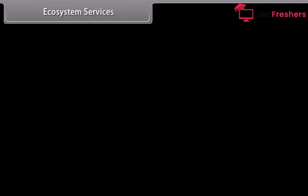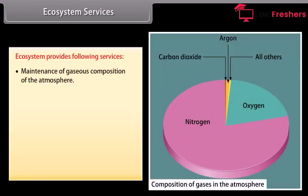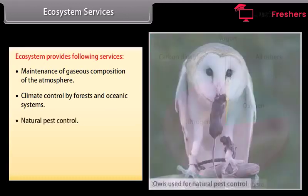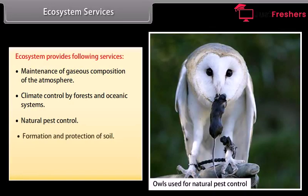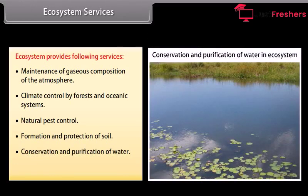Ecosystem services. The ecosystem provides the following services: maintenance of gaseous composition of the atmosphere; climate control by forests and oceanic systems; natural pest control; formation and protection of soil; conservation and purification of water; nutrient cycling, etc.